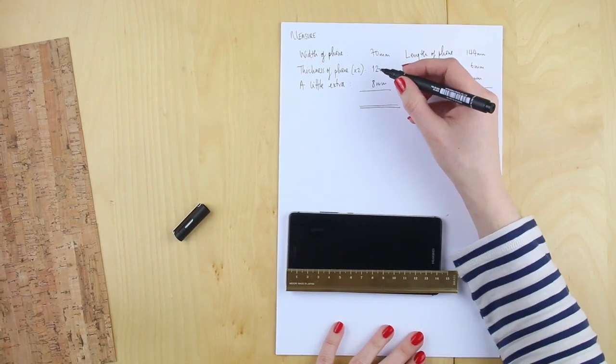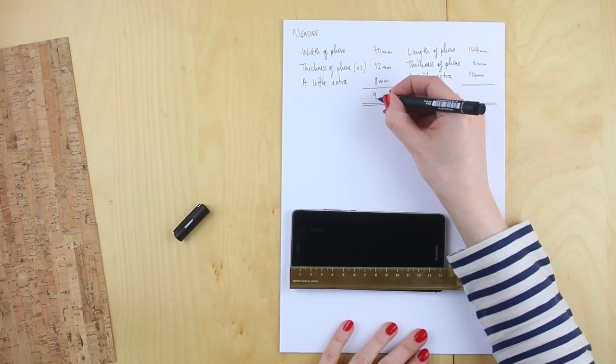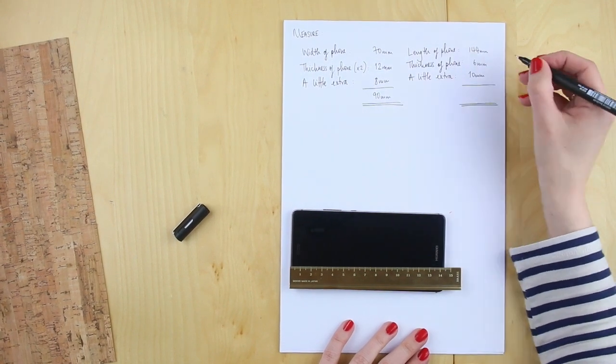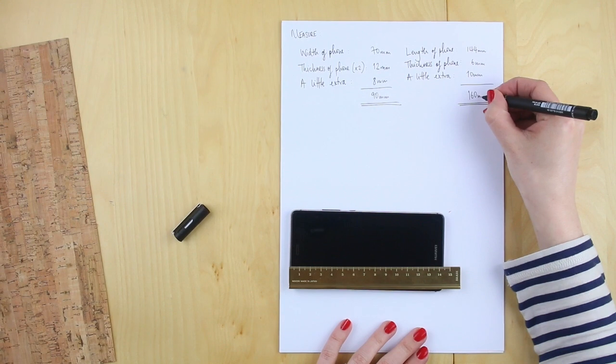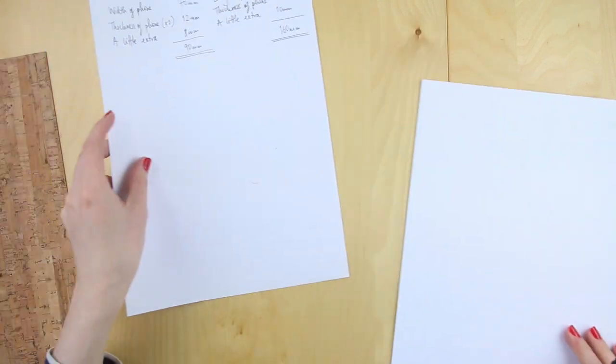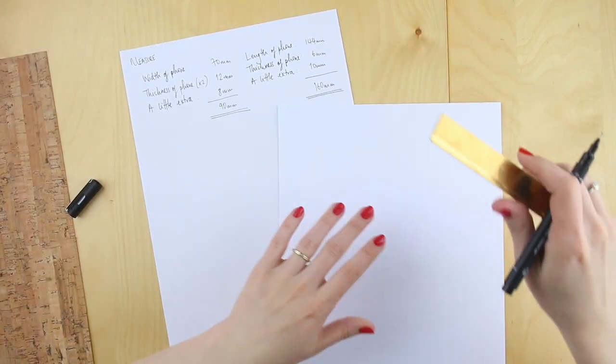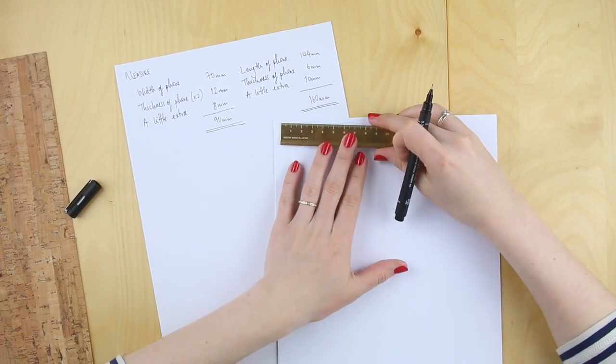So for both the width and the length of the phone you want a little extra just to give it space to get in. So I've allowed eight millimeters on the width and 10 on the length of the phone. Now these give you then a total measurements to draw out. So mine is 90 by 160 millimeters.